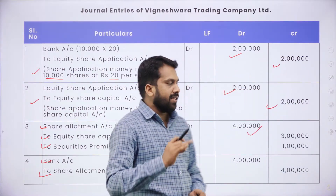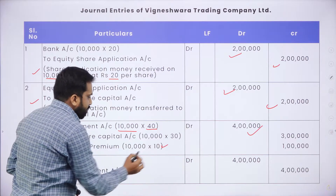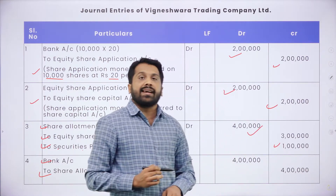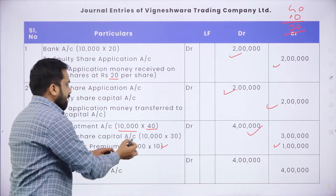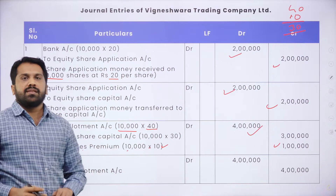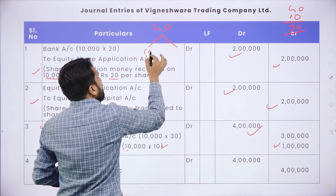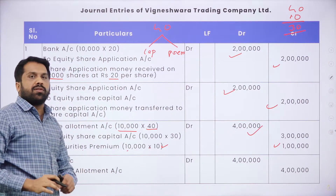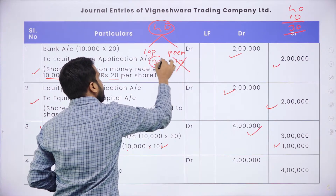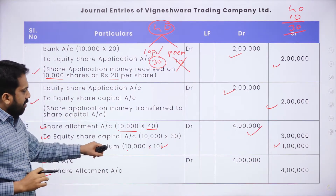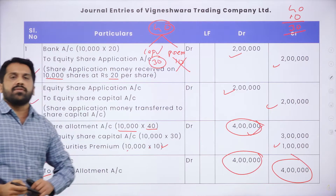While doing allotment, whatever value is given, you have to divide it into two: one is capital, another is premium. Premium is ₹10, so 10,000 × ₹10 = ₹1,00,000 for share premium. Remaining 40 − 10 = ₹30 is for share capital: 10,000 × ₹30 = ₹3,00,000. So allotment entries carry ₹4 lakh. Allotment of shares is done.